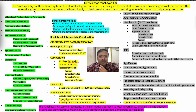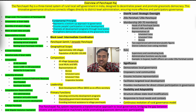Overview of Panchayat Raj: The Panchayat Raj is a three-tiered system of rural local self-government in India, designed to decentralize power and promote grassroots democracy. This innovative governance structure connects villages directly to district administration, ensuring more effective and participatory governance.